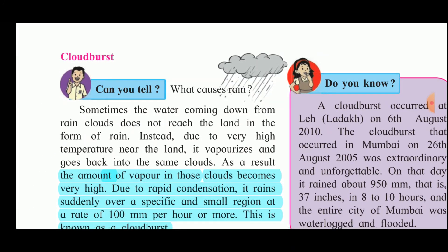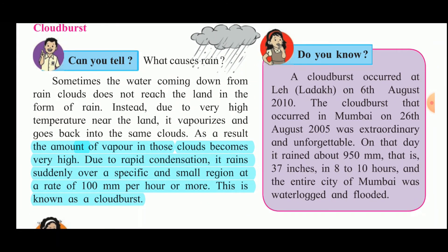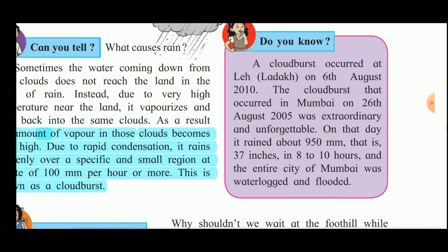The next disaster we will study is cloud burst. We know that clouds cause rain. Sometimes the water coming down from rain clouds does not reach the land but vaporizes due to very high temperature near the land and goes back into the same clouds. As a result, the amount of water vapor in those clouds becomes very high, and due to rapid condensation it rains suddenly over a specific small region at a rate of 100 millimeters per hour or more. This is known as cloud burst.